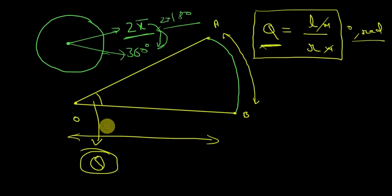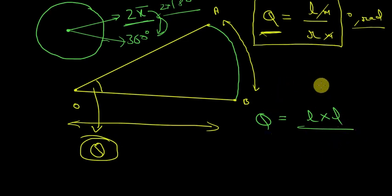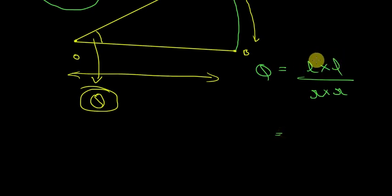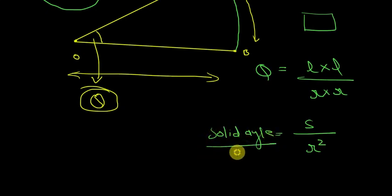Now let's tinker with this formula. What if I multiply the numerator l by another l, and the denominator R by another R? I'm multiplying both sides by a length — it won't change the units. Now l times l is area — a surface — divided by R squared. And this is the solid angle's formula, when the surface is oriented normal.